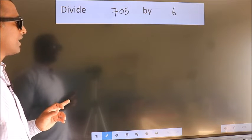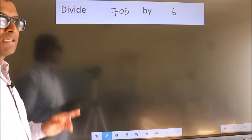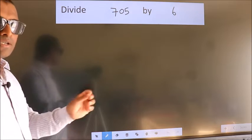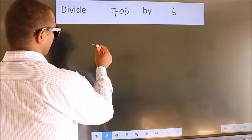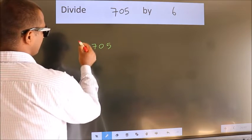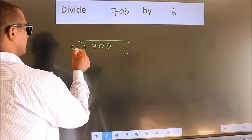Divide 705 by 6. To do this division, we should frame it in this way. 705 here, 6 here.